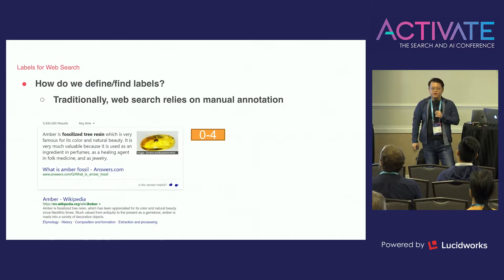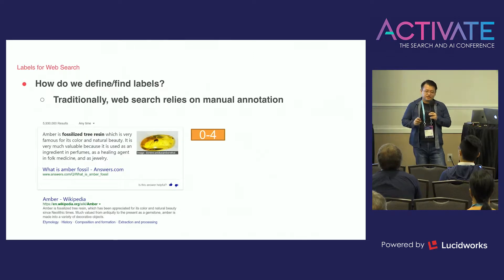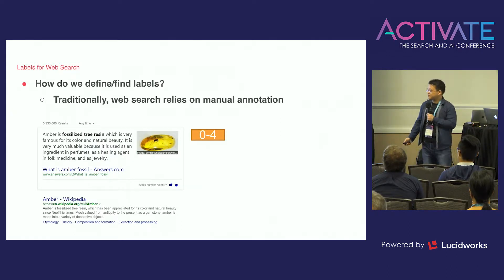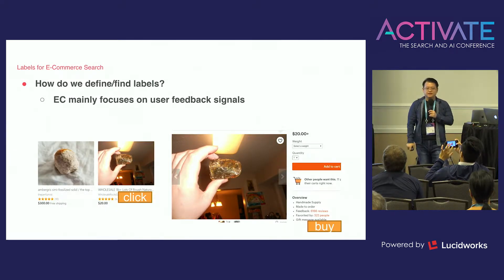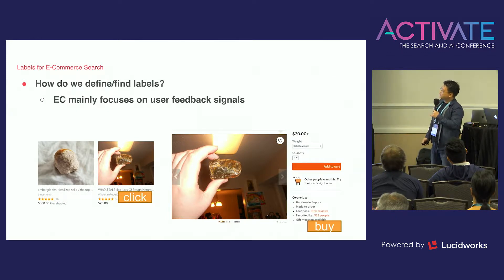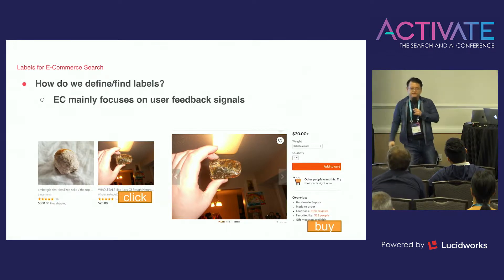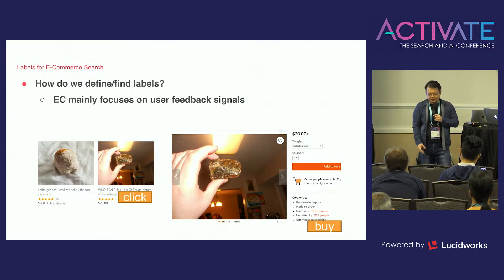We have different objective functions, but how do we define labels? Traditionally in web search like Google or Bing, people hire search experts who manually label every result as relevant or not. But in e-commerce this isn't feasible because it's highly personalized — different customers have different preferences at different times. So in e-commerce, we focus on user feedback signals like clicks and purchases. Given a query, if an item is frequently clicked or purchased, we should rank it higher.